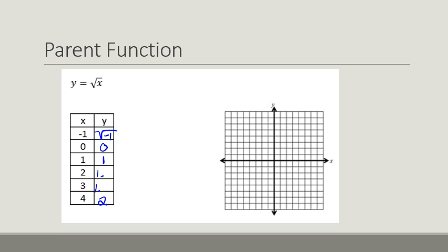So for the purpose of graphing, the 0, 0 is good. The 4, 2 is good.